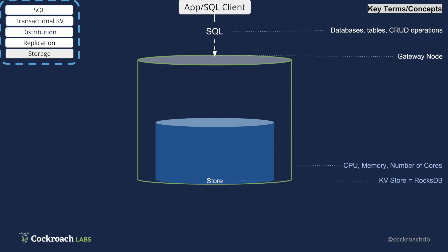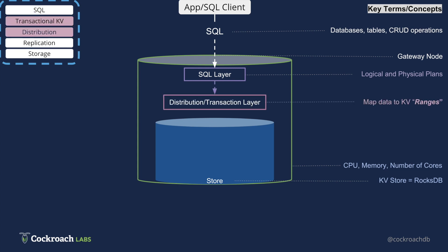Now back to the SQL stuff. The layer that your app connects to is the SQL layer. This layer creates logical and physical plans, which it sends to the transaction and distribution layers. The distribution layer maps the SQL statements into key-value pairs in the form of 64-megabyte chunks of data called ranges, and writes them to the disk.